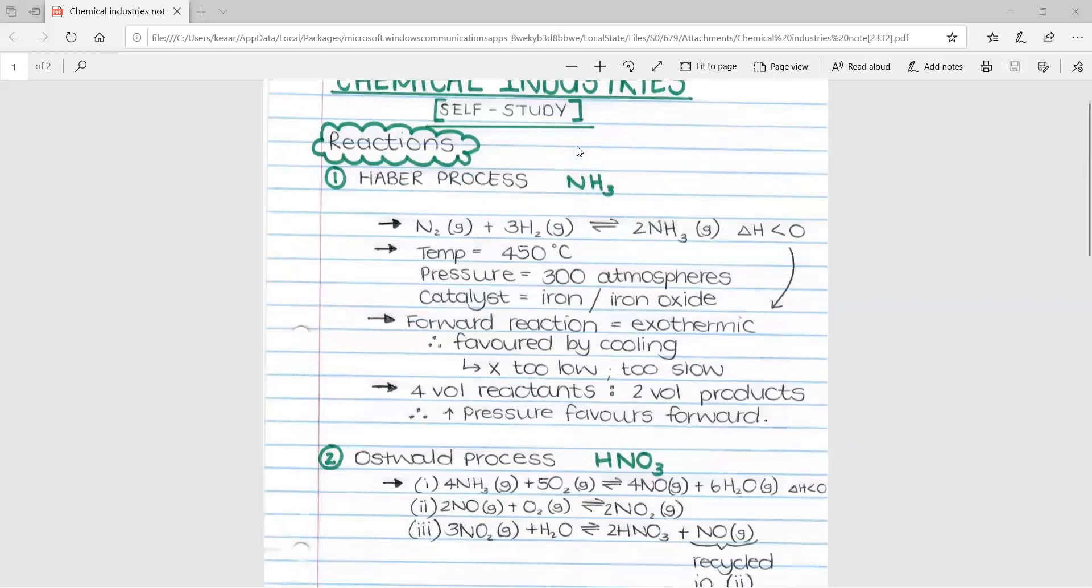We start off with the reactions that are used to form important compounds needed in the fertilizer industry. The first process is the Haber process, which is used to form ammonia, NH3. The equation is N2 plus 3H2 to form 2NH3. Delta H is less than zero, which means that this reaction is exothermic. These double arrows mean that the reaction is a reversible reaction.